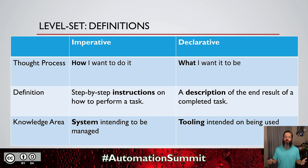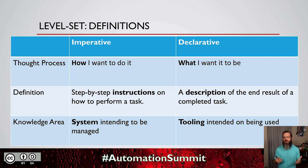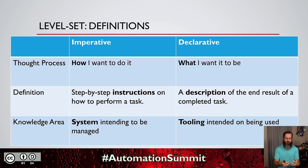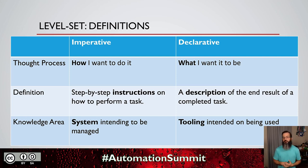First and foremost, let's start off with the definitions on just the difference between imperative and declarative. When it comes to the imperative style of management, think of this as how you want to do something, or coming up with the step-by-step instructions on achieving a task or an end result. Conversely, on the declarative side, this is more of a description — you're defining what you want the end result to be and letting the tooling go out and make that for you.